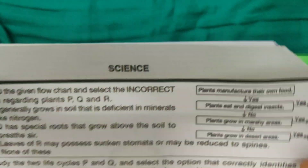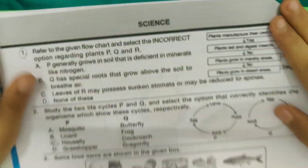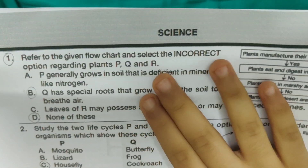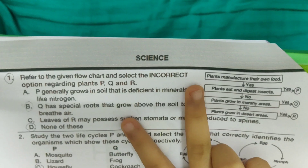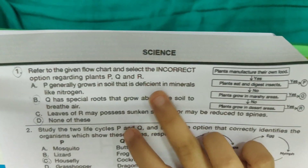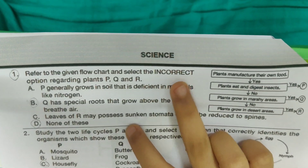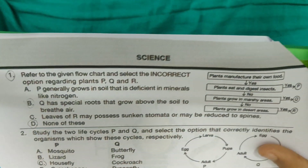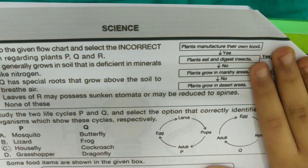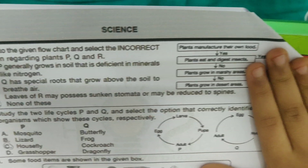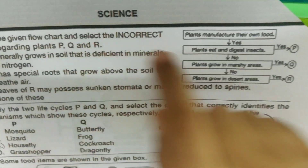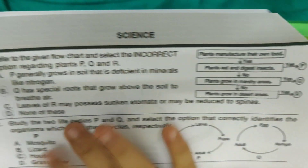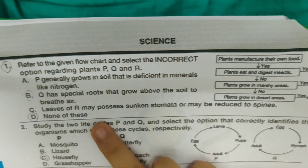First is signs. Refer to the given flowchart and select the incorrect option regarding plans PQR. Everything is correct regarding it, so it's none of these.